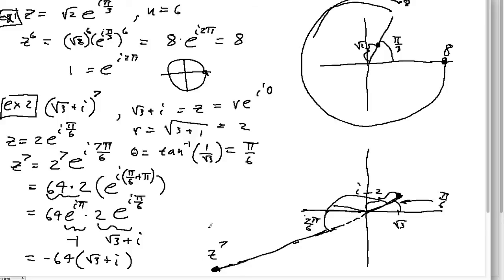Those are some examples of how we can use the polar or exponential form of a complex number to do exponentiation in the complex plane. We now know that magnitudes multiply and angles sum — that's the whole point of multiplication in this form. Thank you very much. Bye.